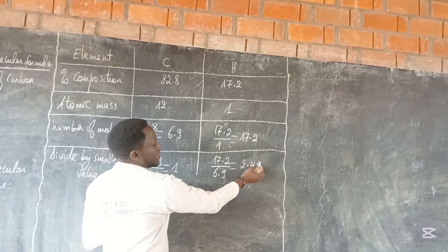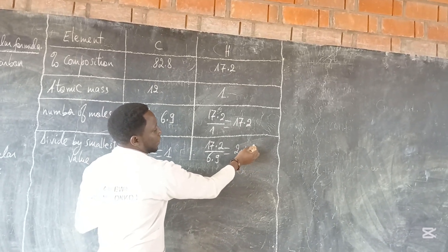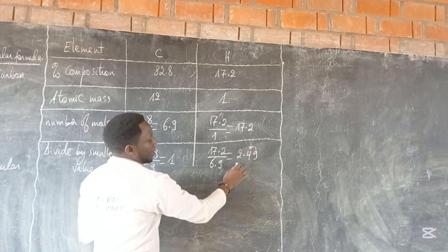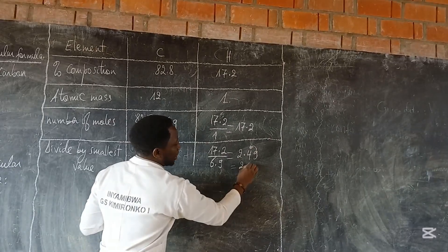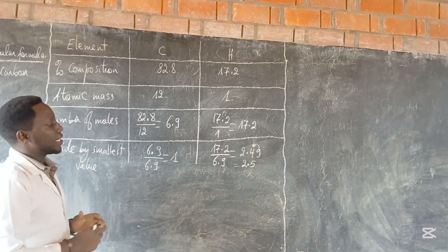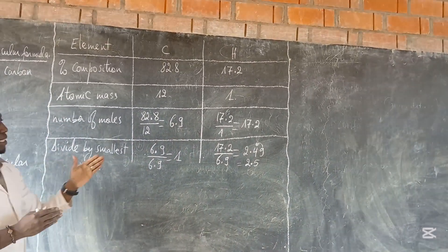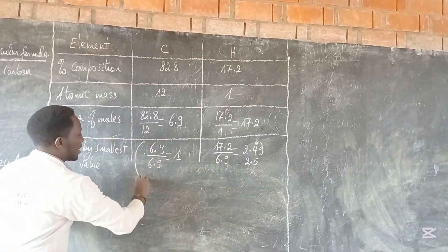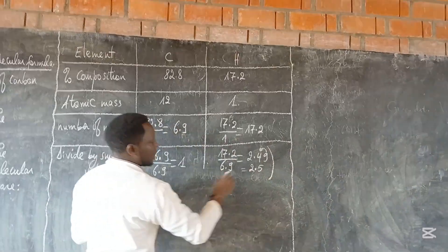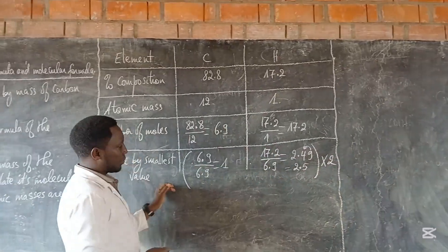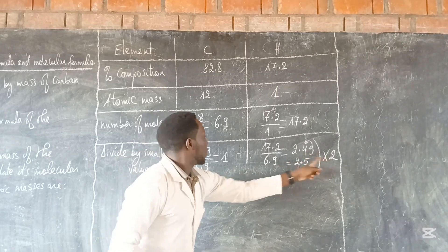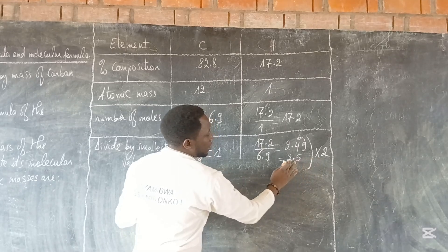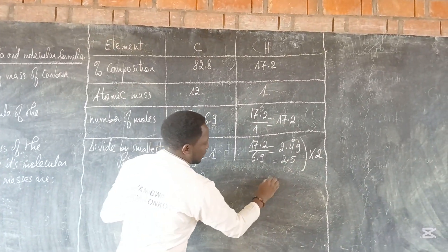Here we have 2.49. Remember, this digit 9 is greater than 5, so you round up. This gives us 2.5. If we have decimal numbers, in order to remove the decimals, we have to multiply by 2 — all answers that we have. So we multiply everything by 2: 2 times 1 gives 2, and 2 times 2.5 gives 5.